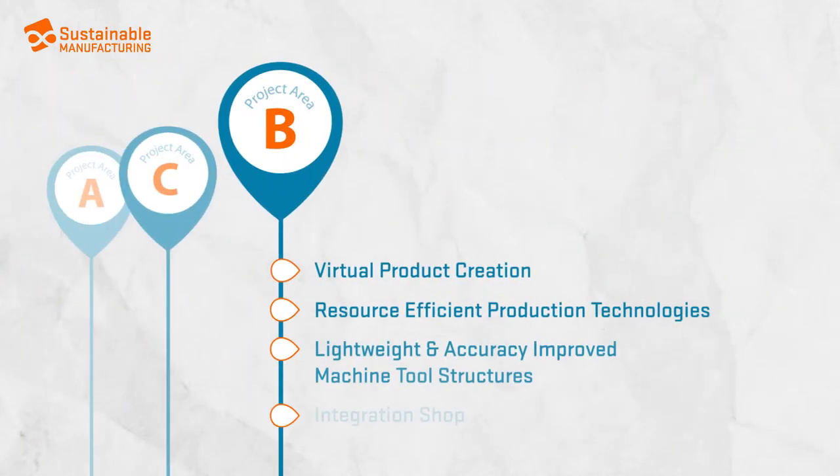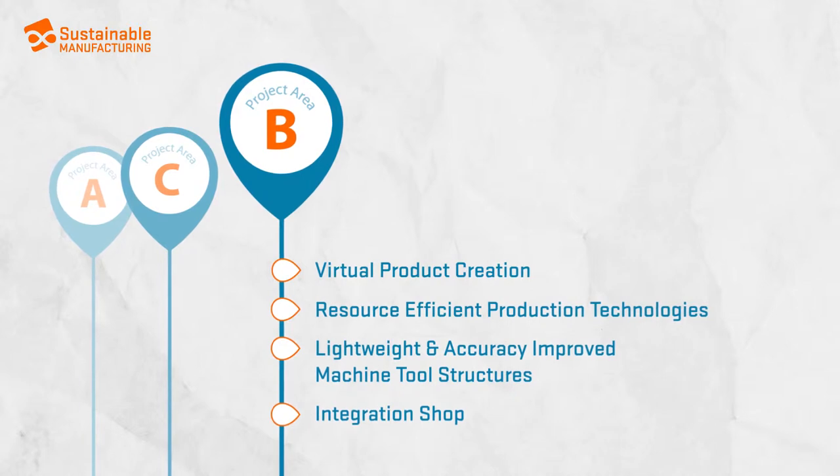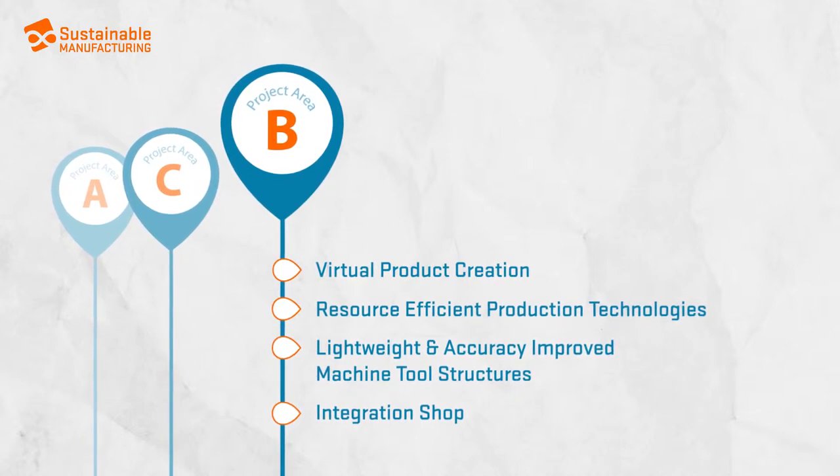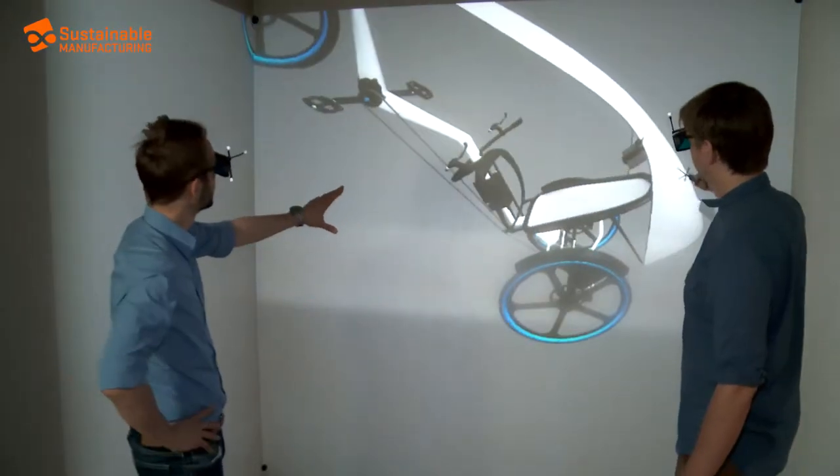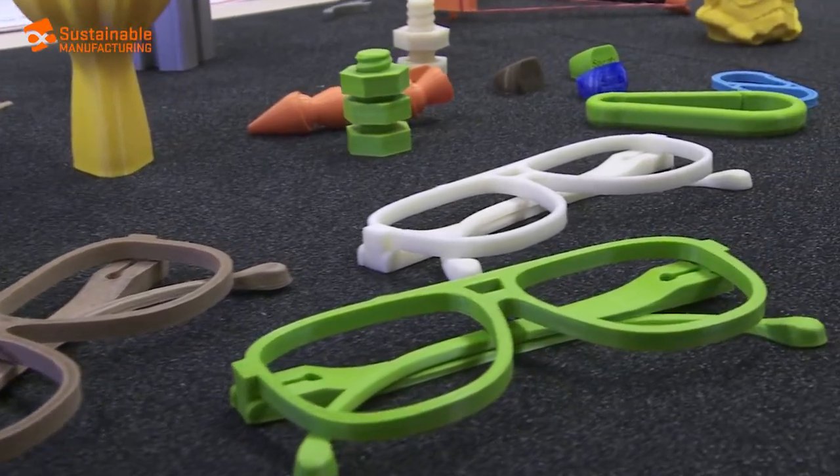Project Area B is researching the potentials of resource-efficient production technologies. From project development to production, through use and recycling, the entire life cycle of a product and the actions within the value creation network are screened.